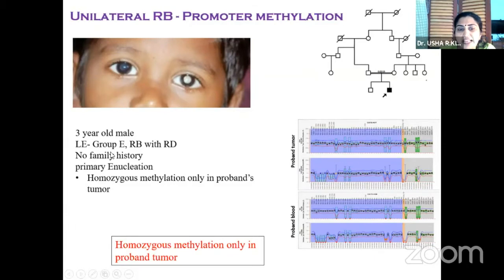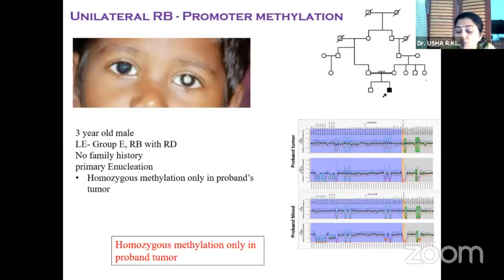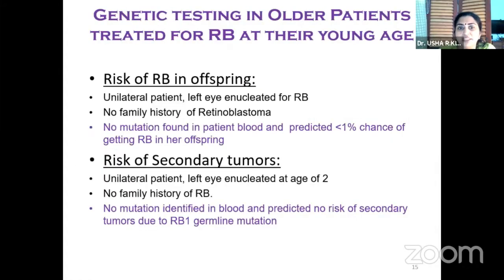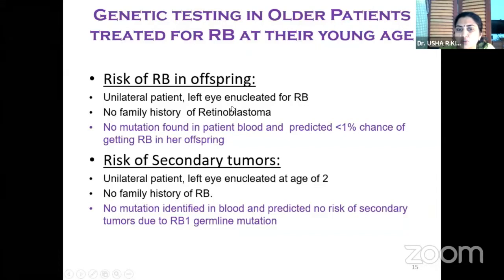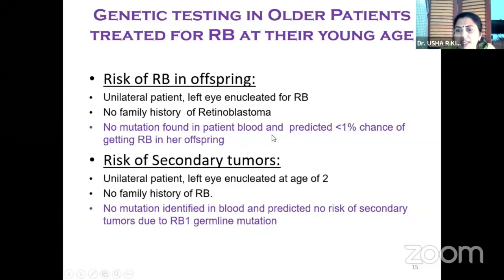A 3-year-old male with group E left eye with retinal detachment and no family history — we did an enucleation and there was homozygous methylation only in the proband's tumor, not in the blood. Later, older patients who were survivors started coming to us asking about risks. In one patient with a unilateral retinoblastoma enucleated 20 years ago and no family history, we identified no mutation found in the patient's blood and predicted less than 1% chance of RB in her offspring. Another patient with unilateral RB and no family history — no mutation identified in blood — we were able to predict no risk of secondary tumors due to RB1 germline mutation.